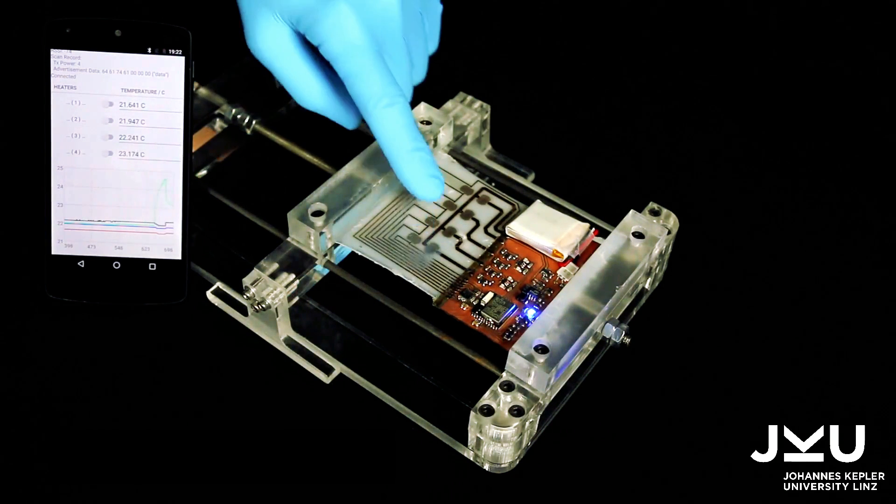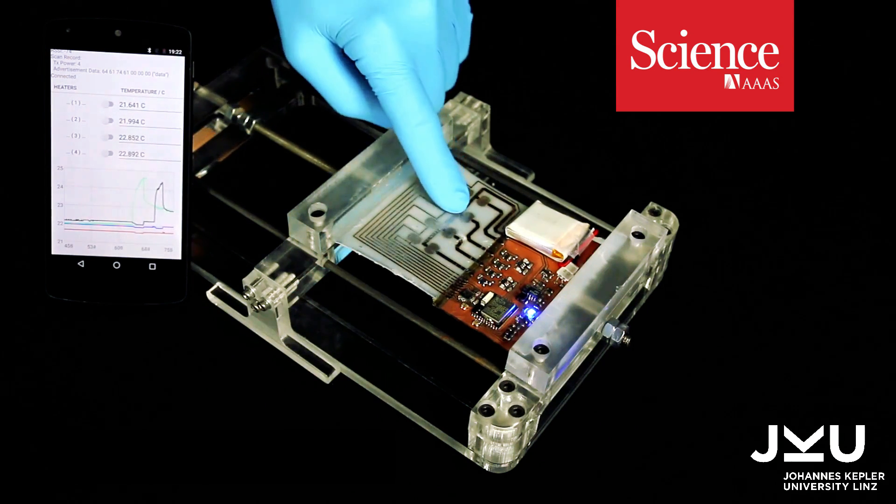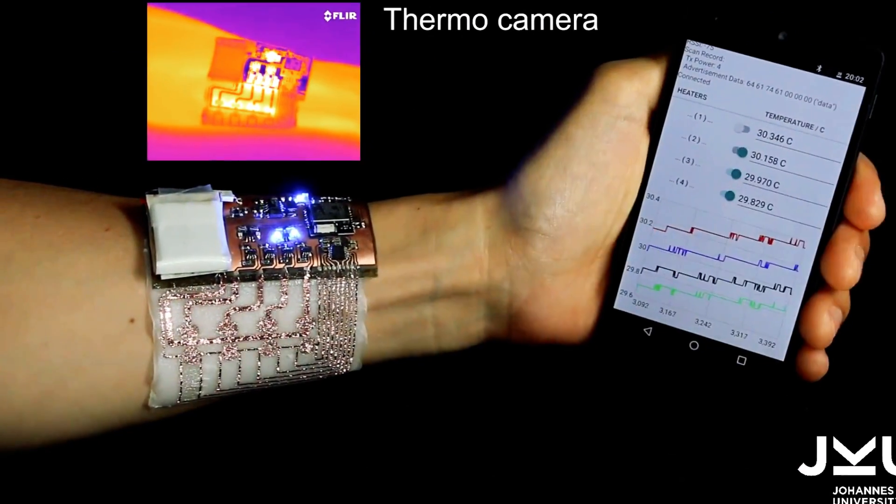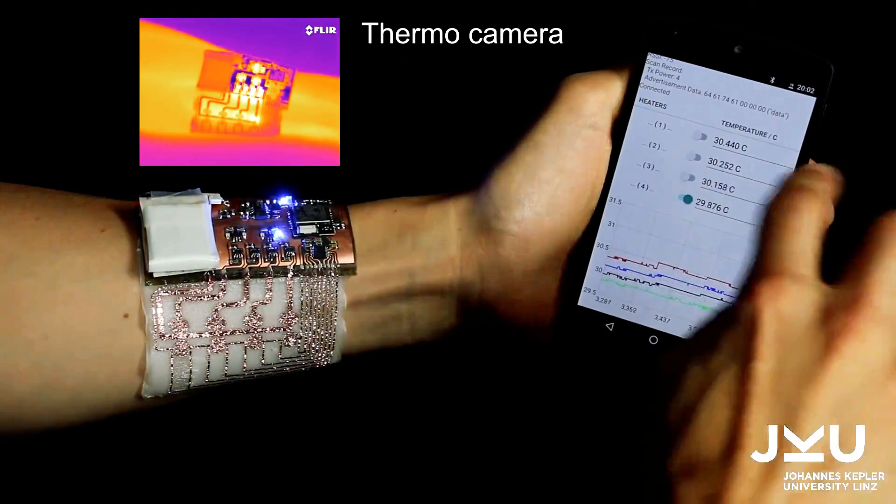Scientists are using hydrogels, which are gels mostly made up of water, to make the next generation of soft electronics and soft robots.